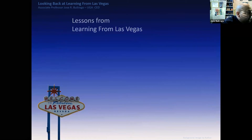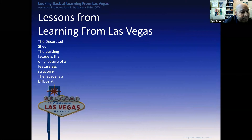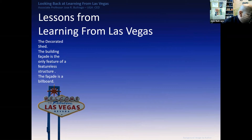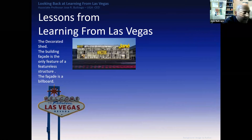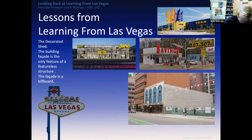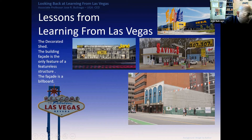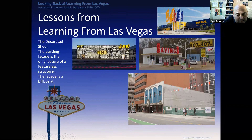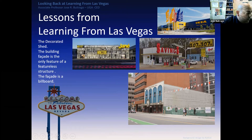The decorated shed: the building facade is the only feature on an otherwise featureless structure, and the facade takes the form of a billboard. We've seen these kinds of examples in every major American city. The one we probably grew up with most is where only one side of the building faces the street — it's just a generic box, very utilitarian. That's where they put all the decoration and gingerbread. And over here we have a more modern take — I'm pretty sure you see this as a wine store. That would be nice for having some wine at the end of my presentation!